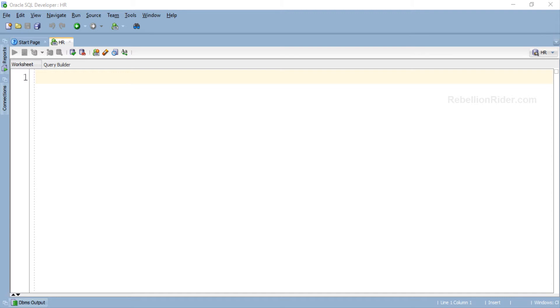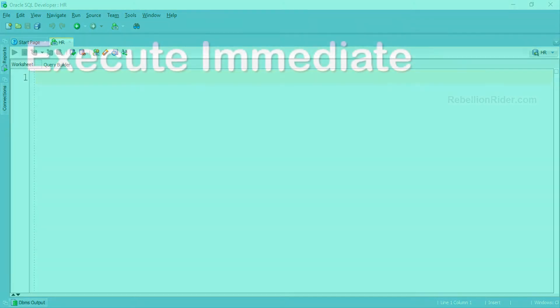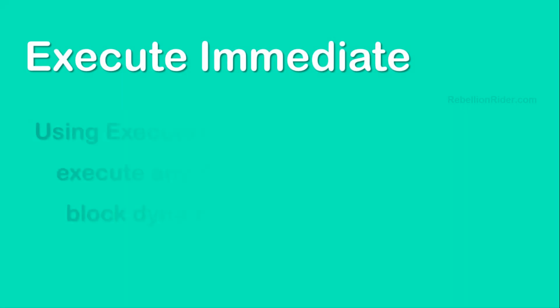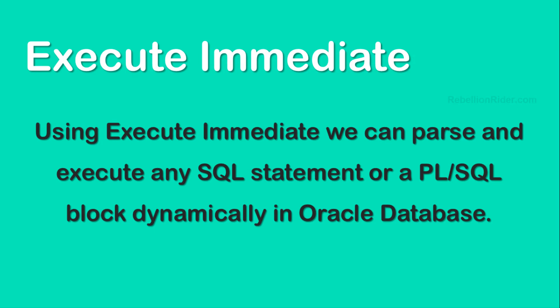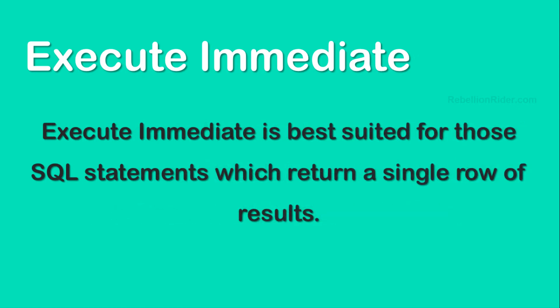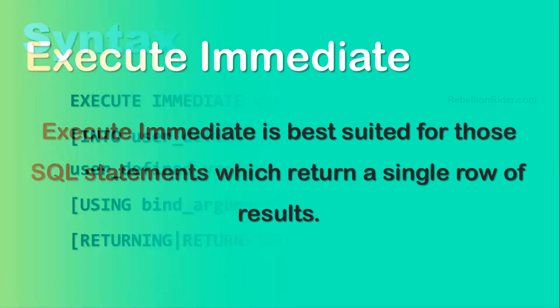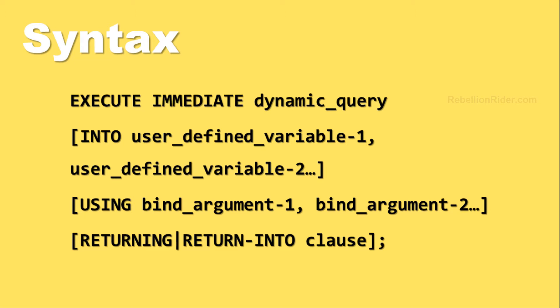Before we start writing an example, let's first quickly see what is an EXECUTE IMMEDIATE statement in Oracle Database. Using EXECUTE IMMEDIATE we can parse and execute any SQL statement or a PL/SQL block dynamically in Oracle Database. EXECUTE IMMEDIATE is best suited for those SQL statements which return a single row of results. If your statement returns more than one row of results, then there are other ways which we will discuss in future videos.